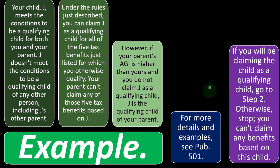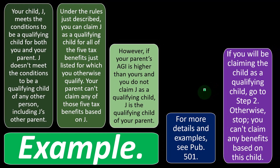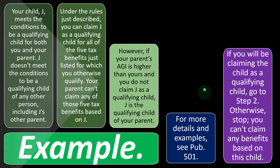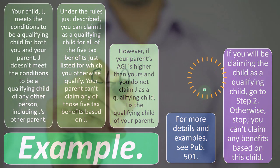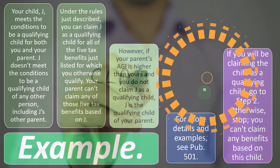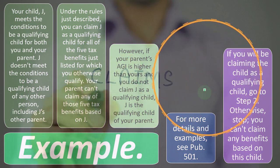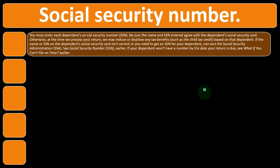If you will be claiming the child as a qualifying child, go to step two; otherwise stop — you can't claim any benefits based on this child.